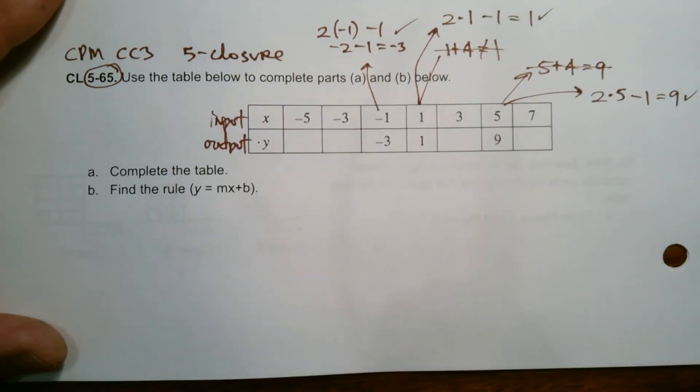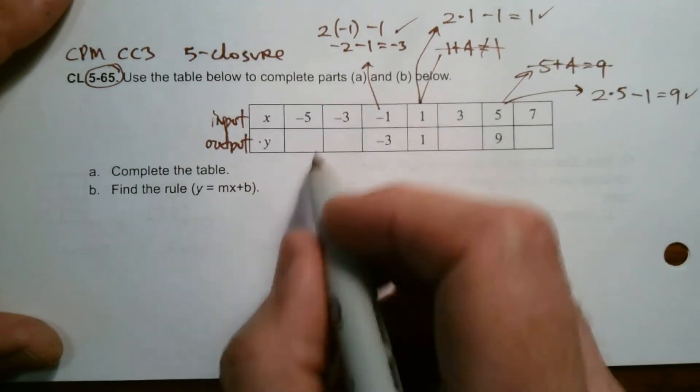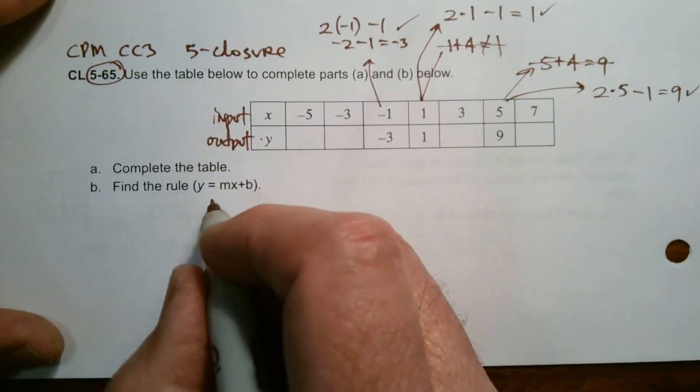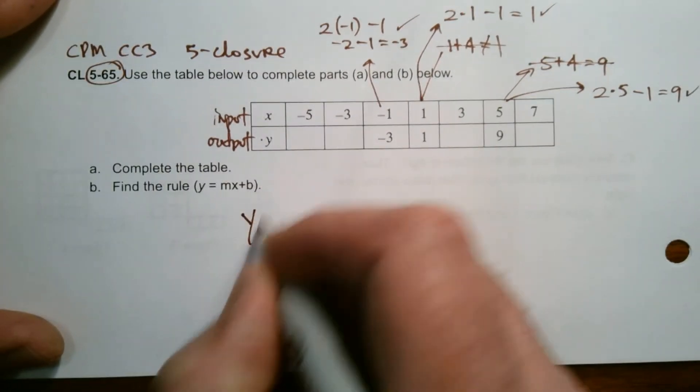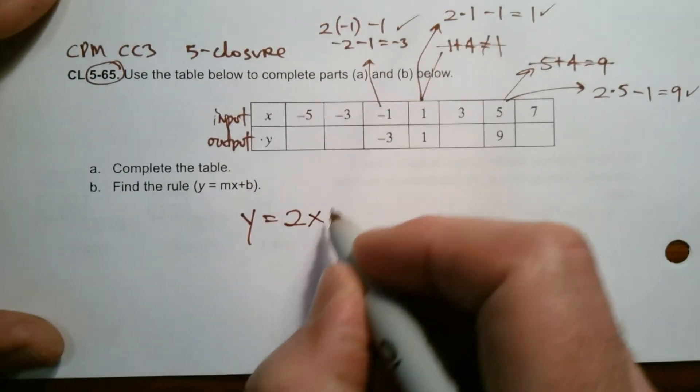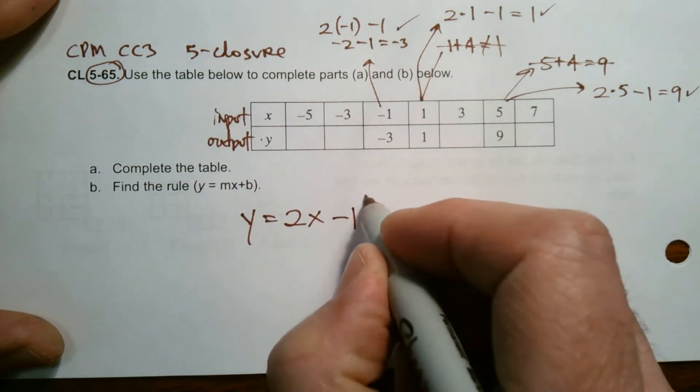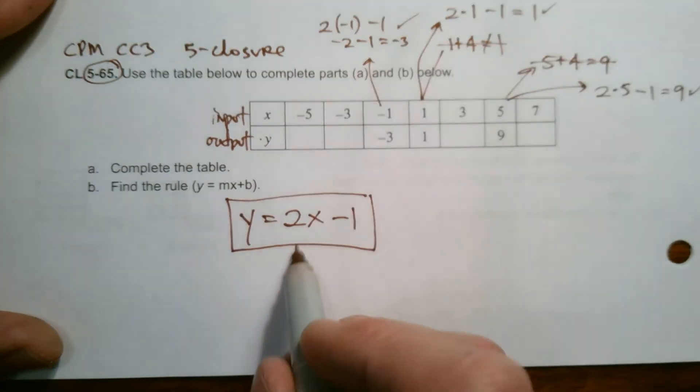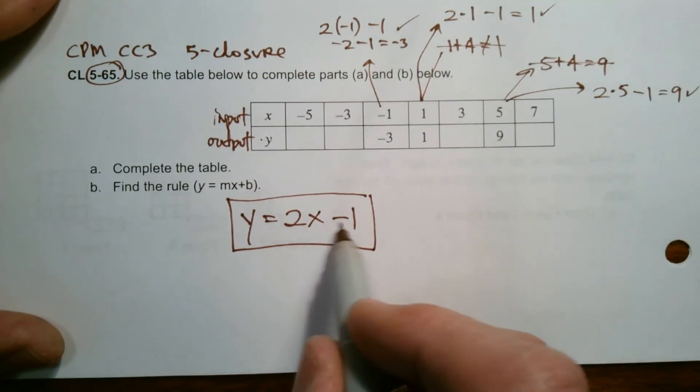So I'll go to write the rule. Then I'll go back and fill in my blanks here. So the rule would be my Y, my output is equal to two times my input. So two X then minus one. So that right there is the rule two times the X minus one.